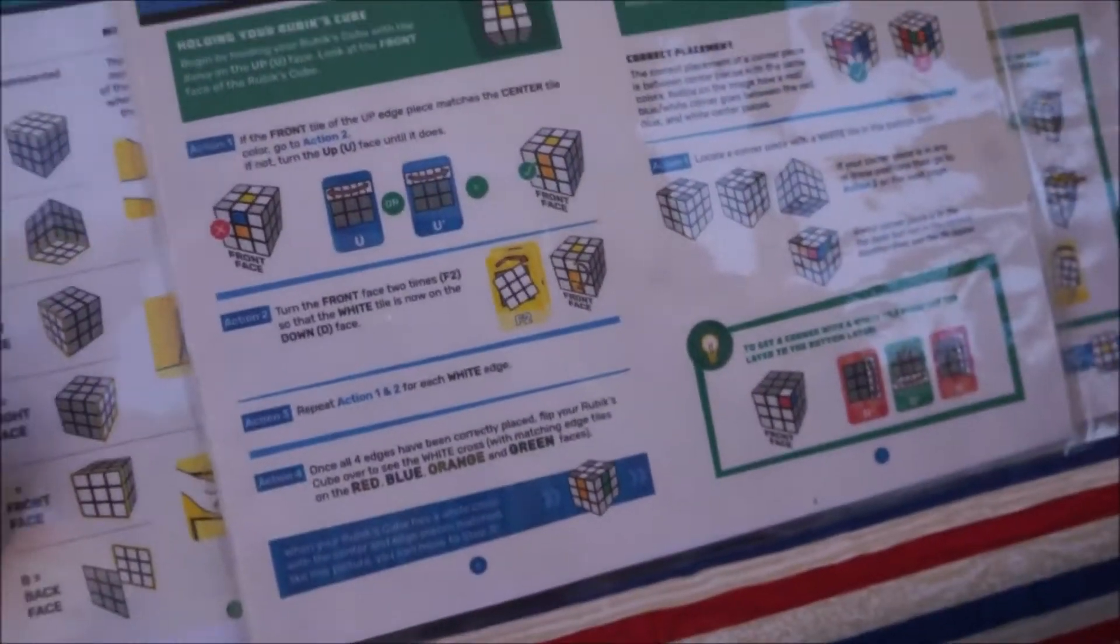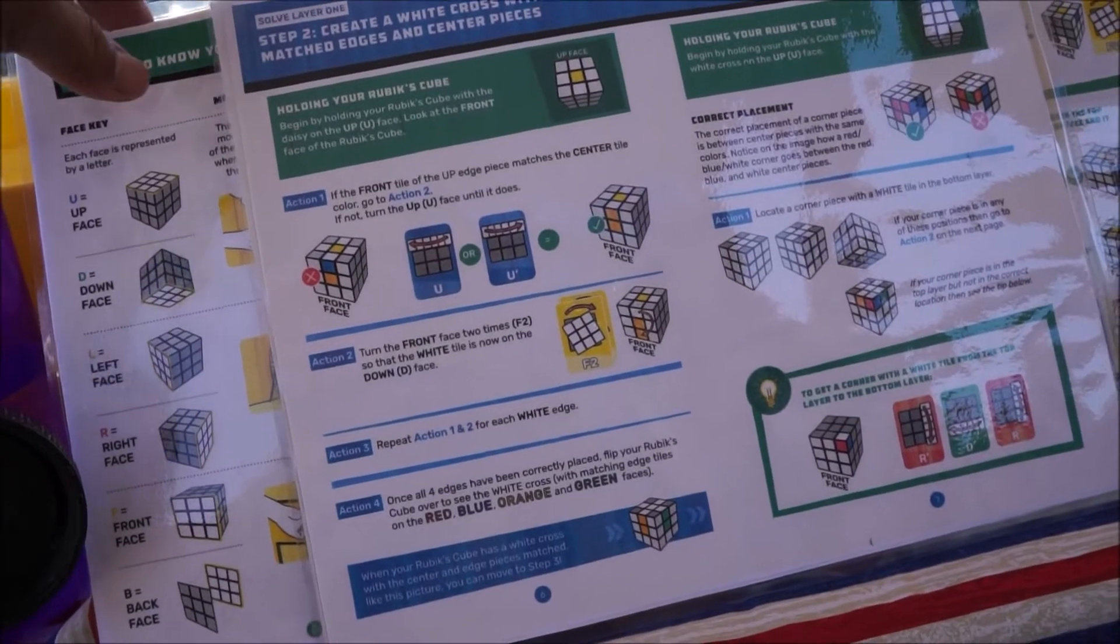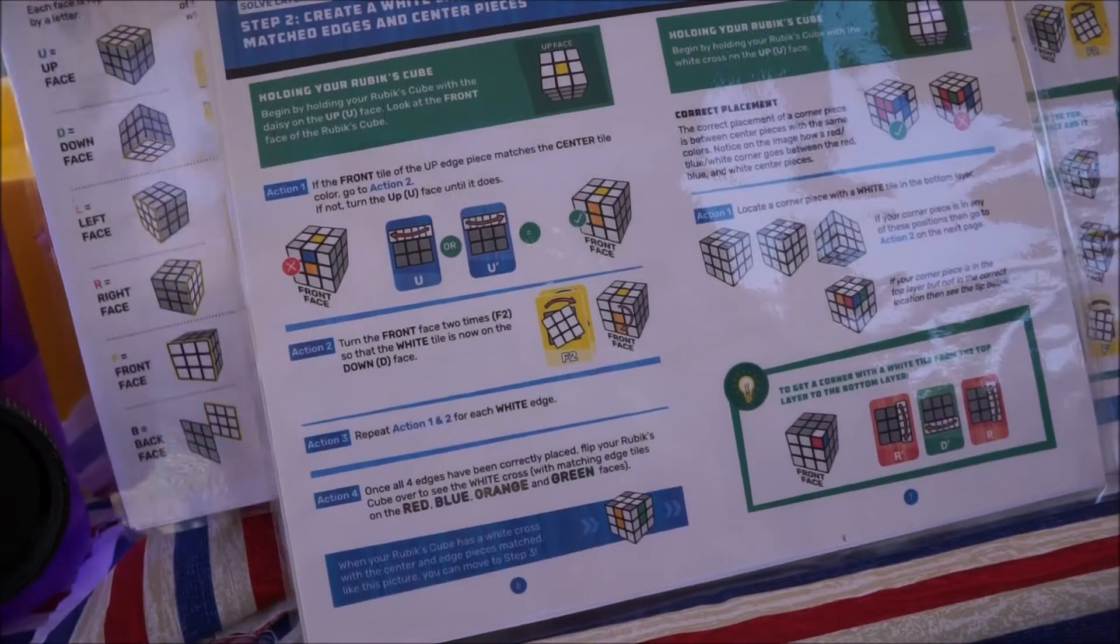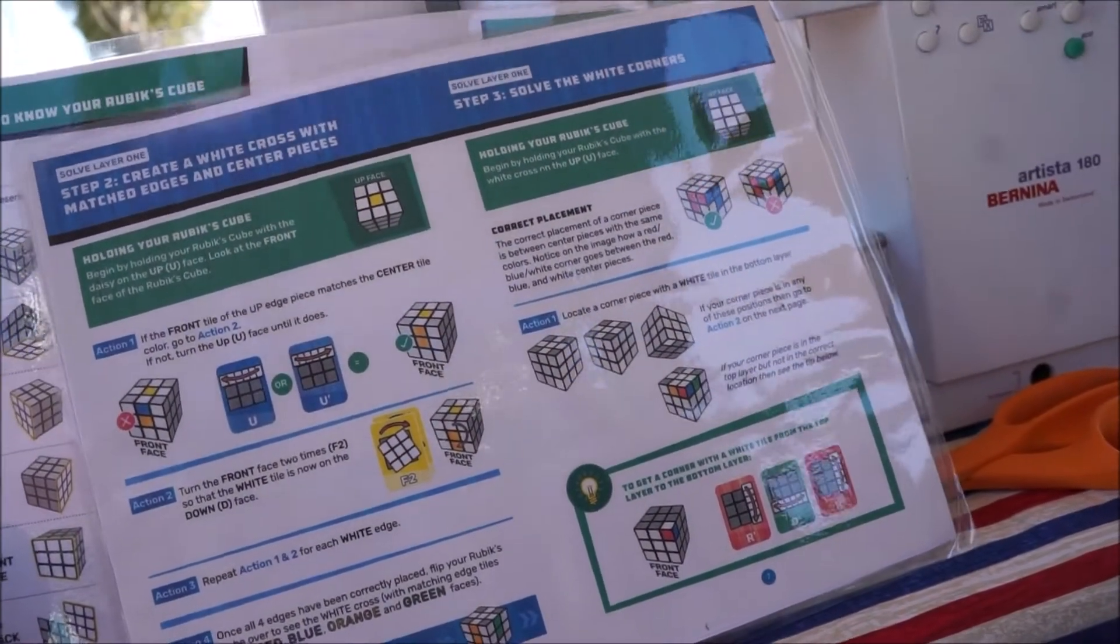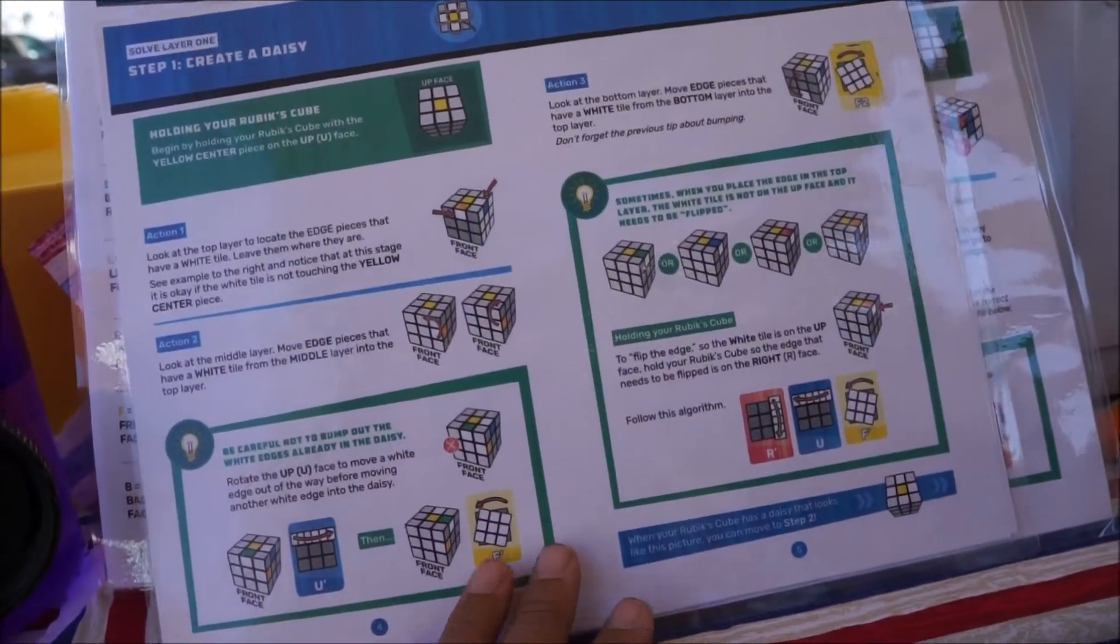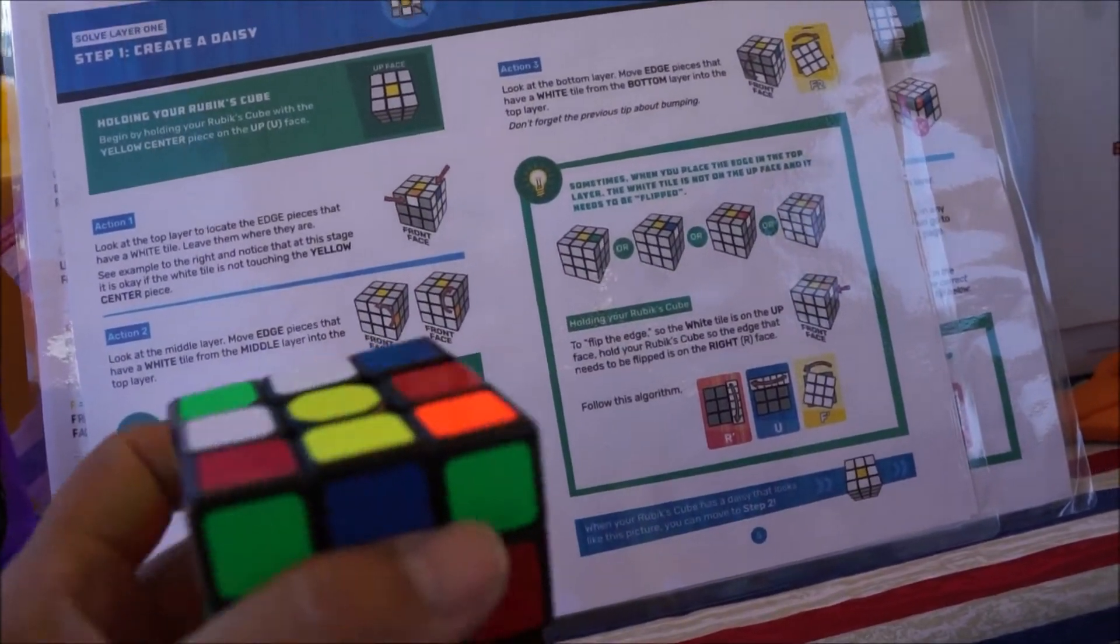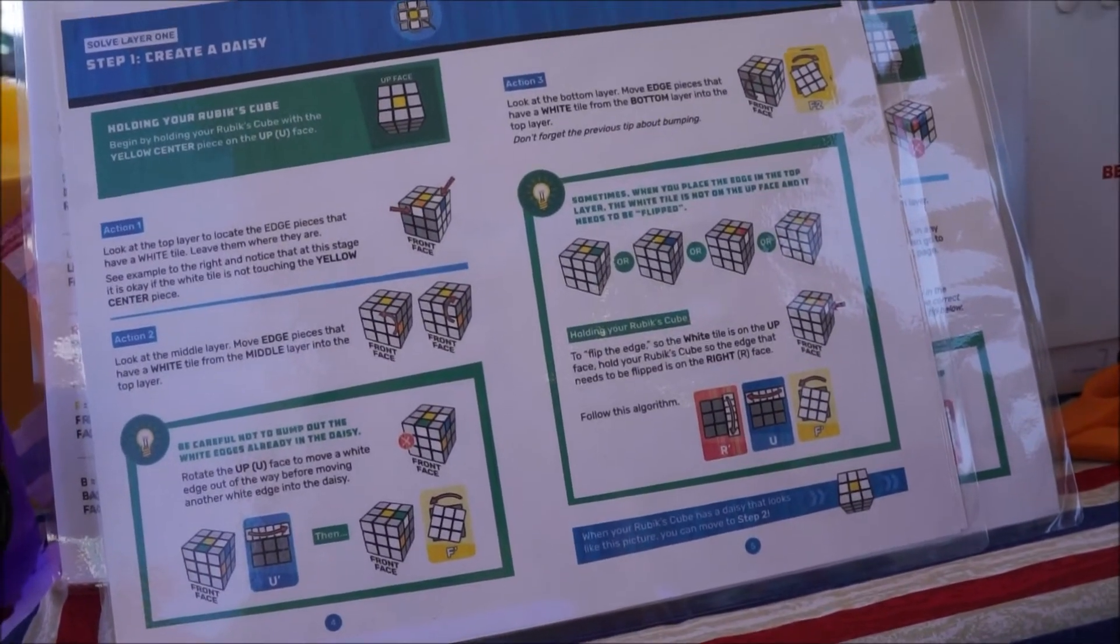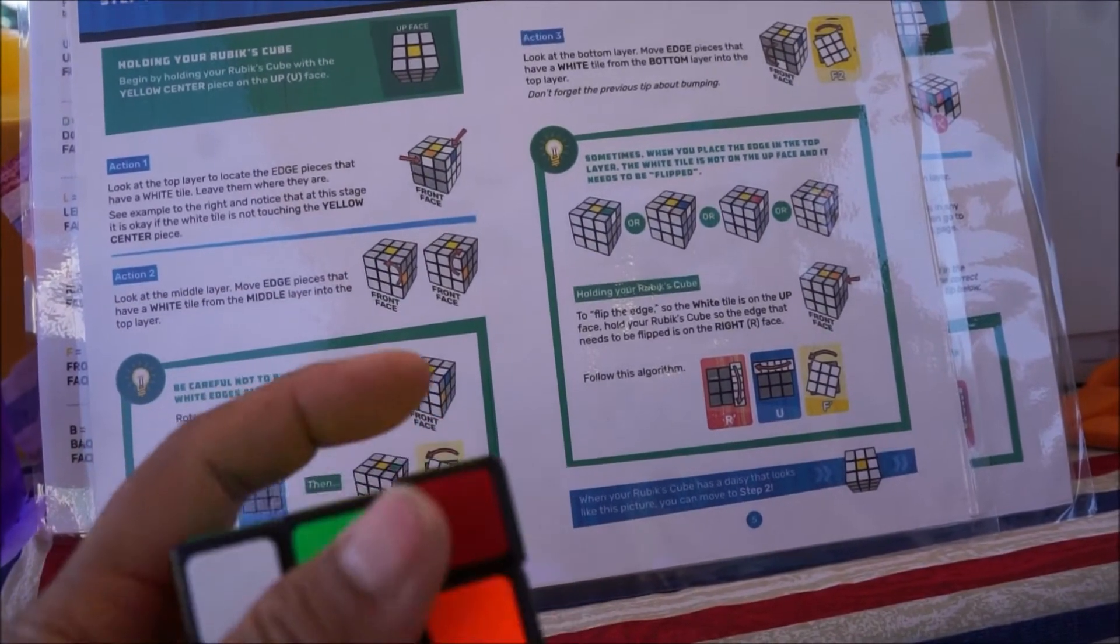Working on solving the Rubik's Cube. So the first step is that you have to make a daisy. You have to make a daisy with a yellow center and white outsides. So I had a daisy and I only have done the first step. But I thought I would share that with you because I understand.